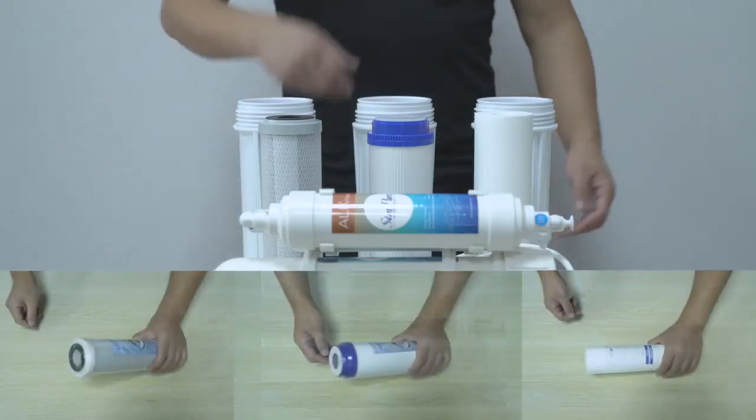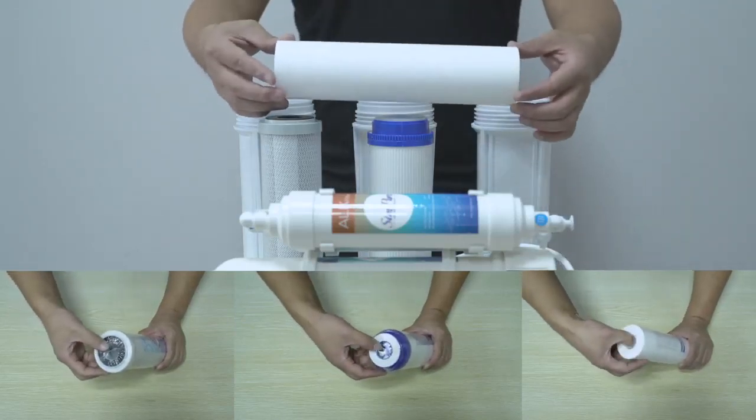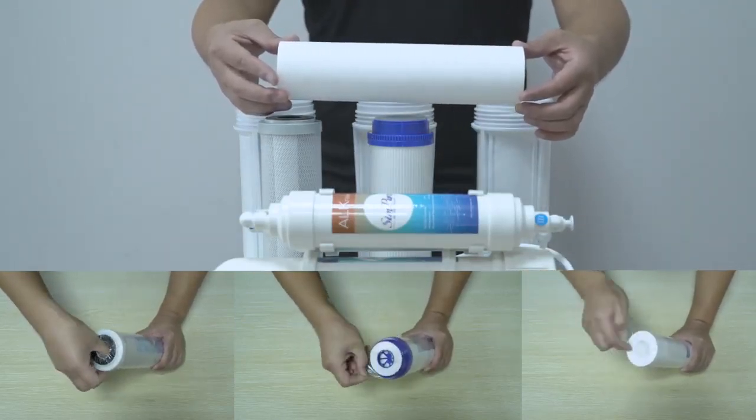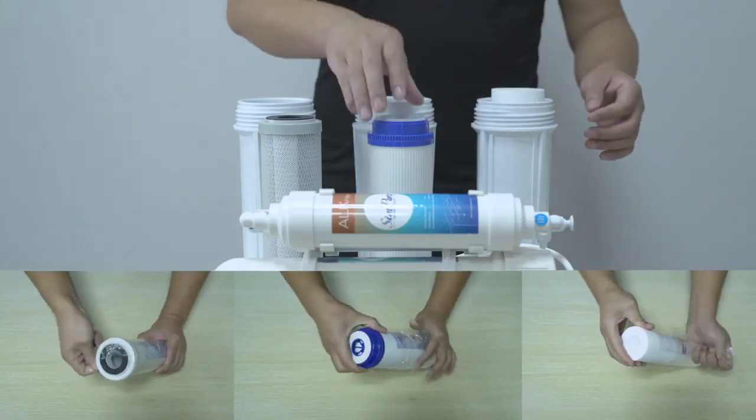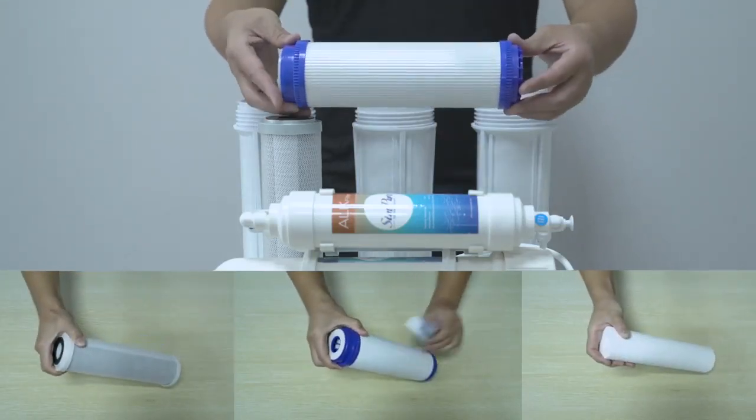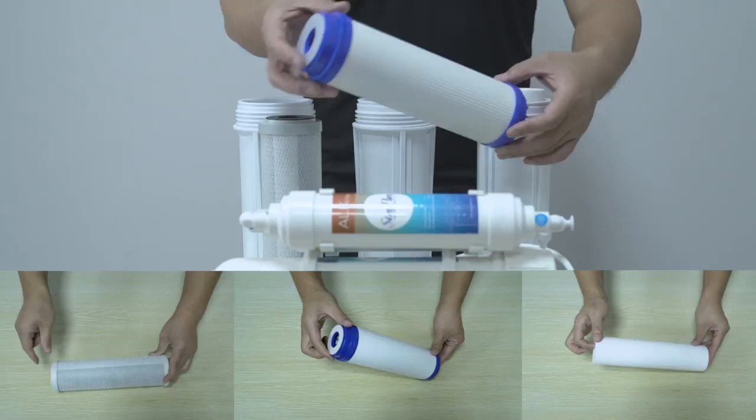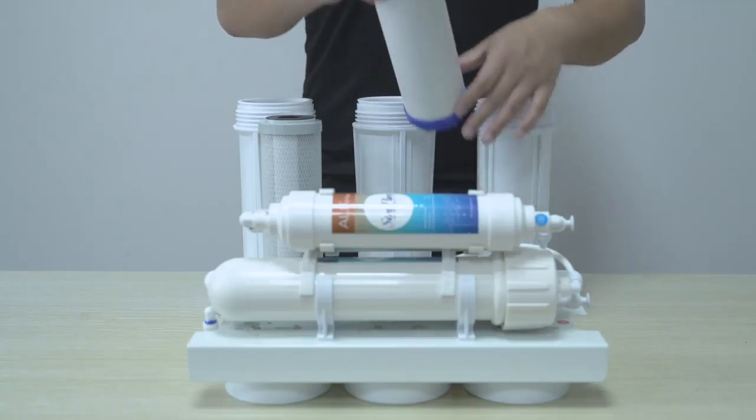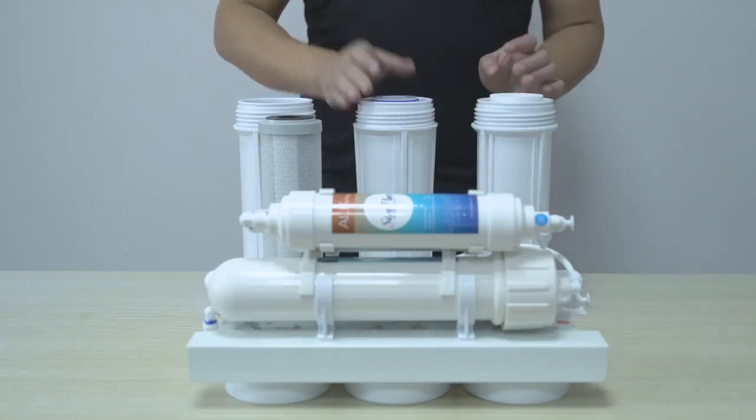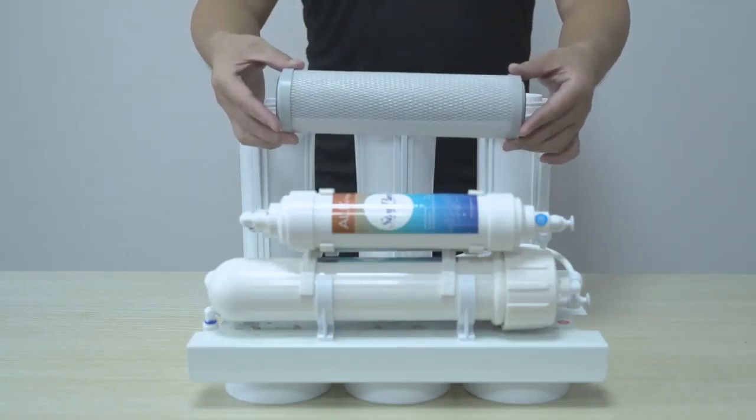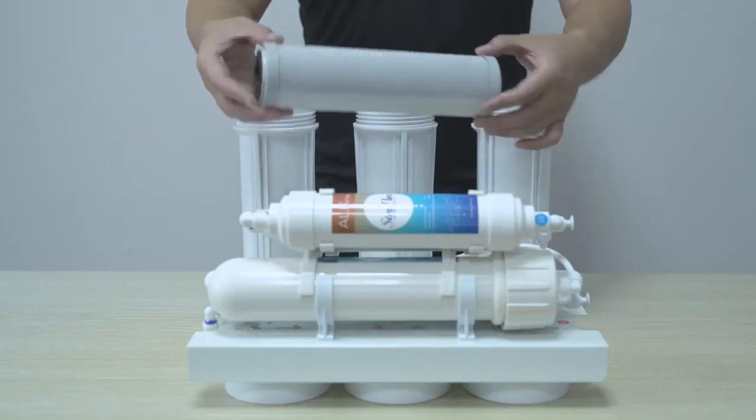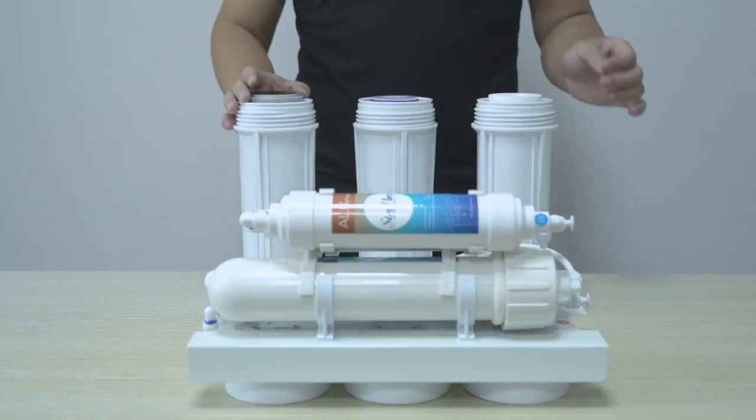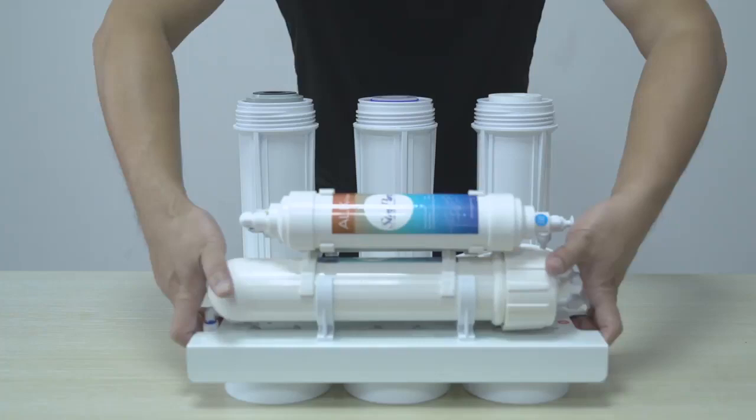Filter cartridges: Install the PP filter in the right-hand filter bowl either way around after removing all the packaging. Next, be very careful when installing the GAC filter into the center position bowl that is the correct way around and all packaging is removed. The sealing gasket must face upwards towards the filter bowl opening. Finally, fit and unpackage the CTO filter either way around into the right filter bowl and hand tighten.